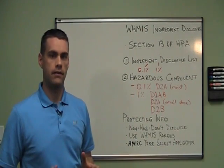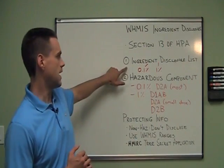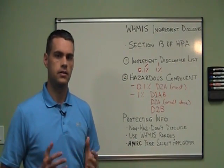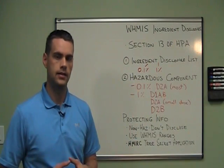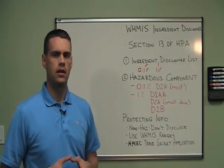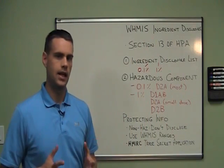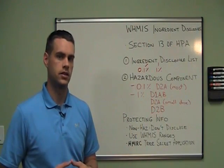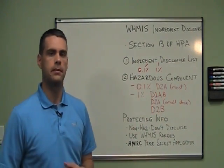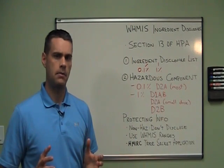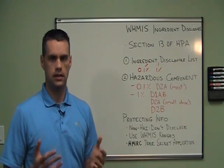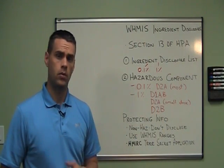There are a couple of steps you have to follow. The first is you need to examine Canada's Ingredient Disclosure List. This is a list of a few thousand different chemicals, so you need to see if your ingredients appear on that list. If they do, they will be given a threshold of either 0.1% or 1%. For example, formaldehyde, by name or by CAS number 50-00-0, is on the list with an ingredient disclosure limit of 0.1%. So if formaldehyde makes up 0.1% or more of your mixture, you need to disclose it on your MSDS. If it's less than 0.1%, you do not.